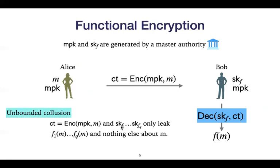We are interested in unbounded collusion in this setting, which means that we consider security with respect to q secret keys — so for q functions, f1 all the way up to fq. And this q is a polynomial which is not set up in advance, so the scheme is unbounded. We only want to leak f1 of m, fq of m, and nothing else about the message.